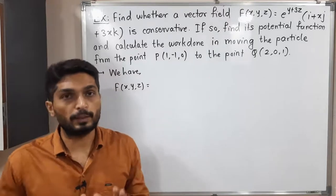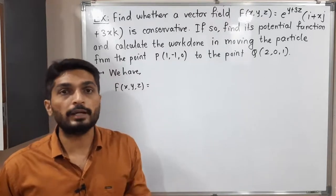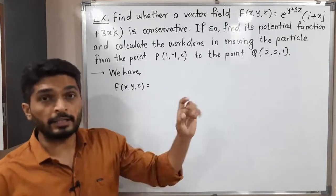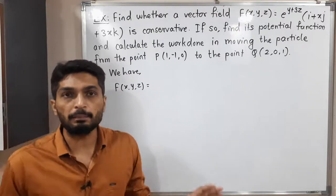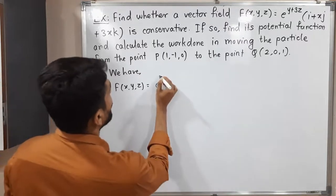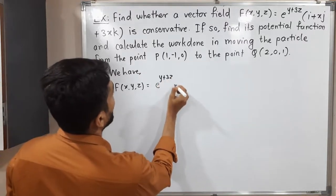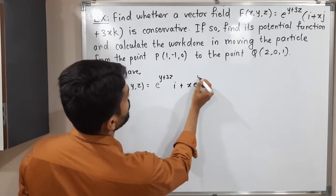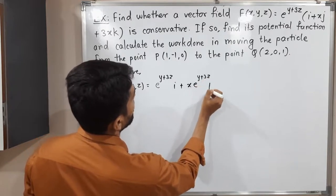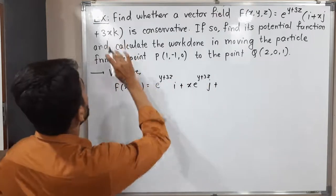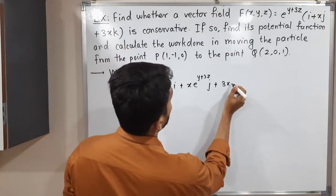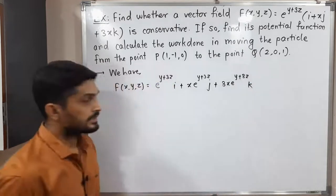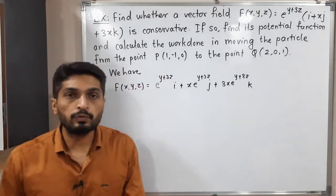Let us solve all these questions one by one. Let me write the given vector field properly. They are given: e raised to y plus 3z — we will multiply that bracket — so we will have e^(y+3z) i, plus x·e^(y+3z) j, plus 3x·e^(y+3z) k. So this is the given vector field.